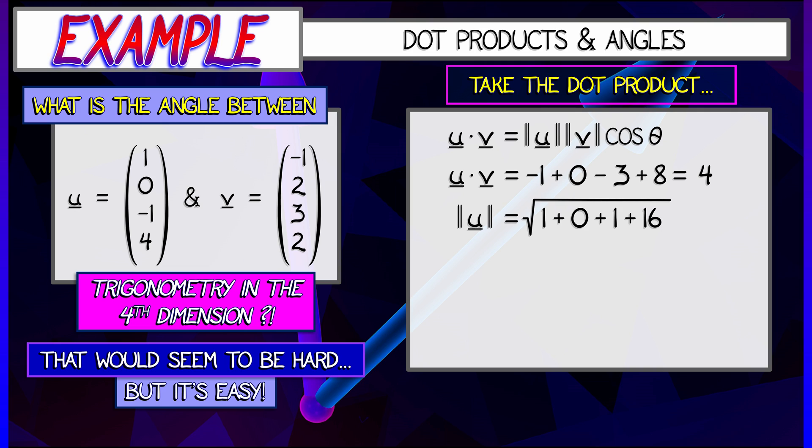Now, from this formula, all we need to do is compute the length of u, which is the square root of u dot u, which is square root of 18, as you can check. And we need to compute the length of v, which conveniently is also equal to the square root of 18.